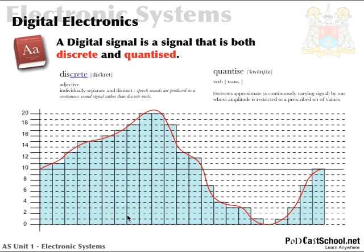I've also given you the definition of the word discrete and the word quantized. Discrete meaning something being separate or distinct. And quantized meaning something that's been restricted to a prescribed set of values — in other words, something that's been approximated. So we can say that a digital signal is both discrete and quantized. That gives you sort of where this signal is going to come from, but we're going to build upon it now and I'm going to show you exactly what the digital signal will become.